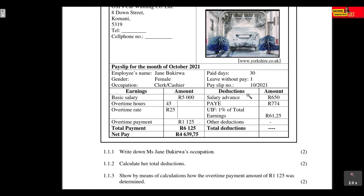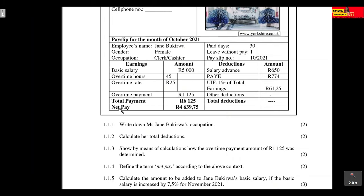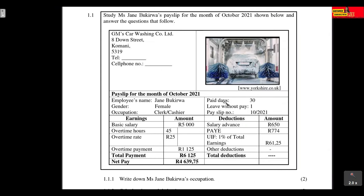Now let's look at her deductions. She requested a salary advance of R650, which gets deducted when she receives her salary. PAYE is the amount she pays towards her tax. The UIF — Unemployed Insurance Fund — is R61.25. To get the total deductions, you add these amounts together. Net pay is calculated by taking the gross salary — the salary before deductions — and subtracting the total deductions.